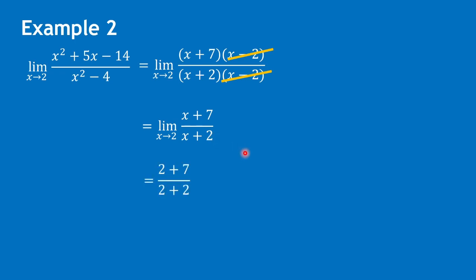By substitution, we can have 2 plus 7 over 2 plus 2. So the limit of this function is 9 over 4.